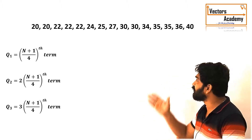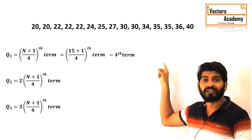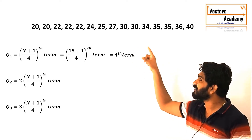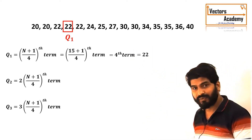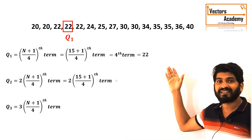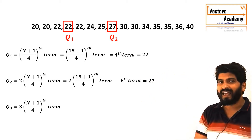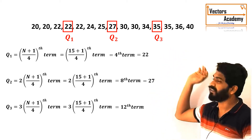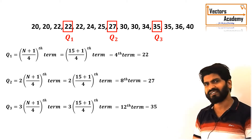In this case the number of observations is 15. So Q1 comes out to be the fourth term. The fourth term in the sequence is 22, hence the first quartile is 22. In the same way, the second quartile is the eighth term, which comes out to be 27. And the third quartile is the twelfth term, which comes out to be 35. So this is how quartiles are calculated for discrete data.